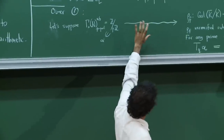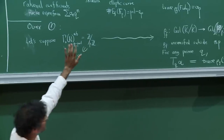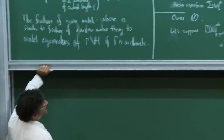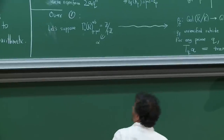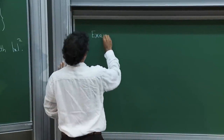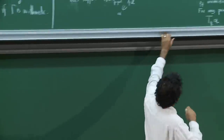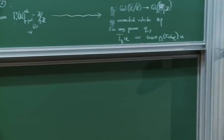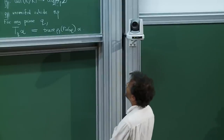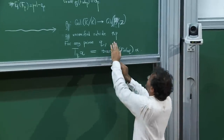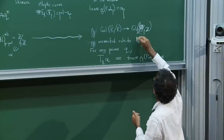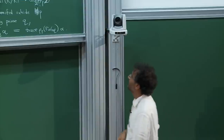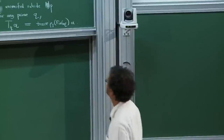This looks somewhat incomprehensible if you've never seen this kind of thing, so let me pick a special case to make it more friendly. This is a lot harder than the case over Q. Let's take the example when p is 2. When p equals 2, you abelianize and see that the 2-part is just Z mod 2. Say that rho is surjective.